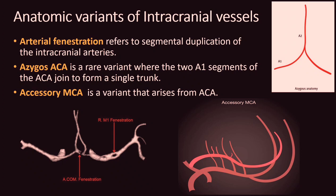Here are a few anatomic variants of intracranial vessels, important to know so that they are not reported as abnormal communications. These include arterial fenestration, which refers to segmental duplication of intracranial vessels. The azygos anterior cerebral artery is a rare variant where the two A1 segments join to form a single trunk. The accessory MCA is a variant arising from the anterior cerebral artery, while the duplicated MCA arises from the ICA.